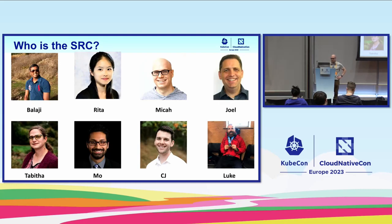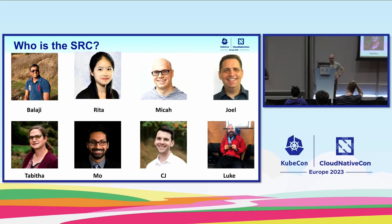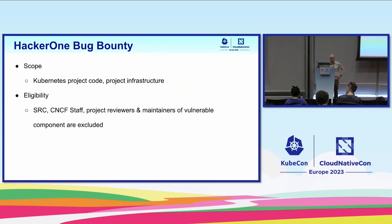We have broad representation within the community — myself and Rita are from Microsoft, Micah and Balaji are from Amazon, Joel's from Red Hat, CJ is from Google. This diversity is important because what matters to Microsoft might not matter to Amazon, depending on how you deploy and run Kubernetes. When we do a severity rating we want to take into account various deployment models and err on the side of caution — if something we'd call a medium is a high for some subset of users, we factor that in.